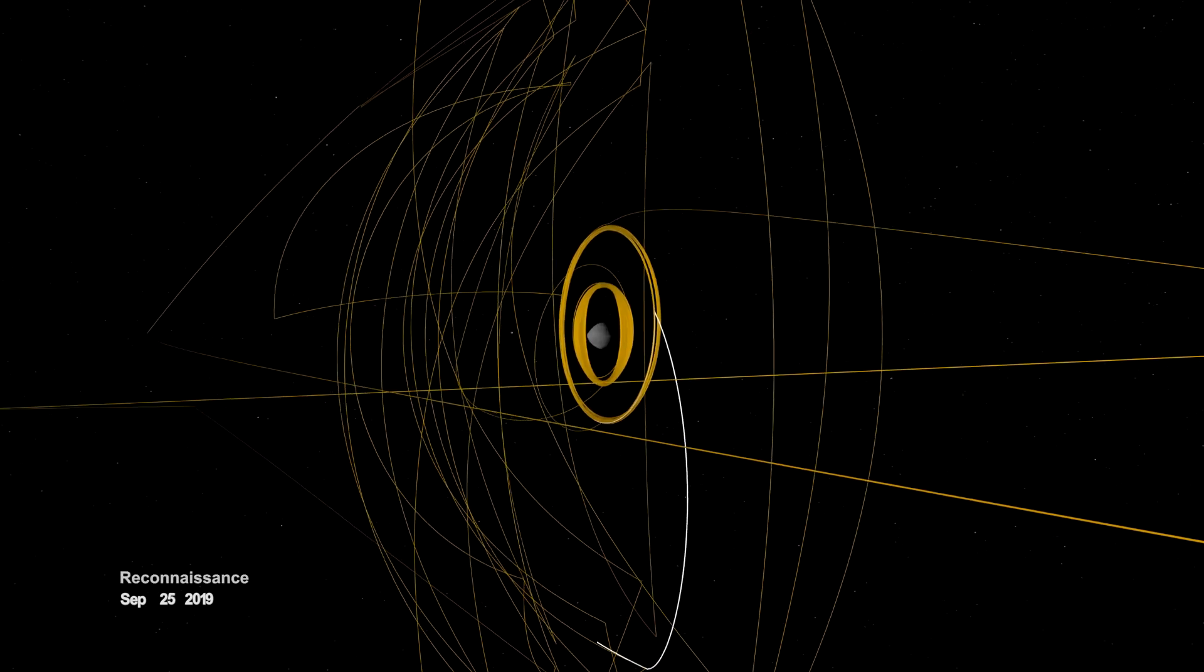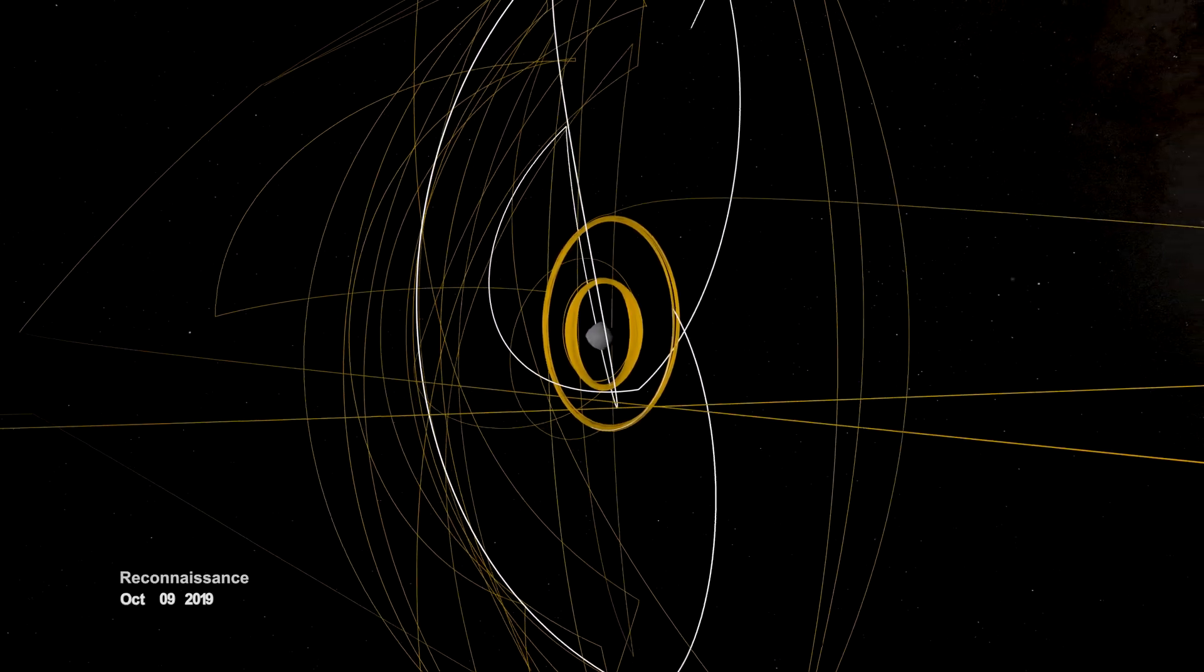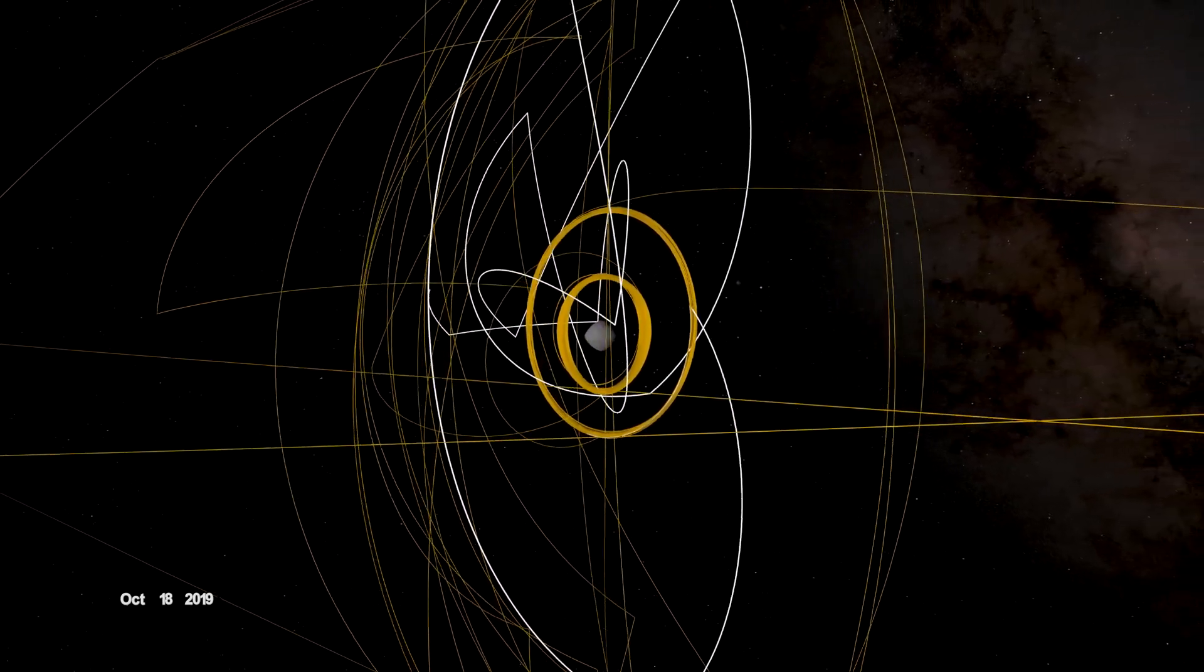In September, it began reconnaissance on four candidate sample collection sites, potential locations on Bennu to touch down and collect a sample later in the mission.